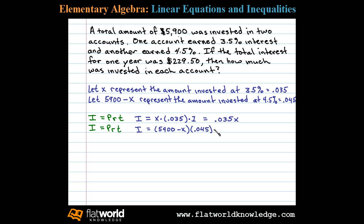The rate in that account is four and a half percent, or as a decimal 0.045, times one year. We can write that as 0.045 times (five thousand nine hundred minus X). That's the actual amount of interest in that second account.